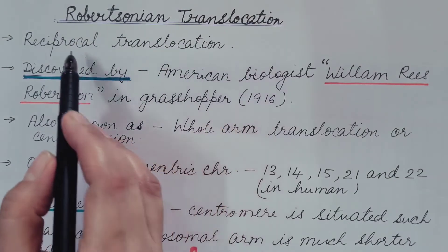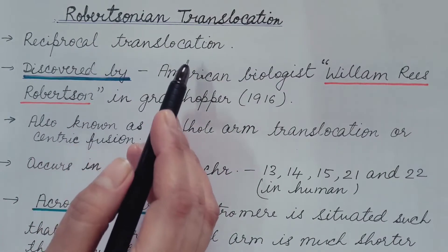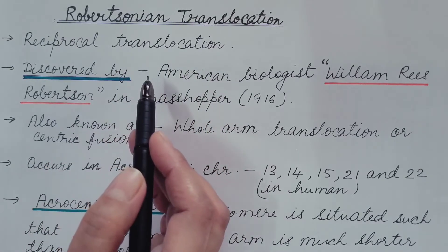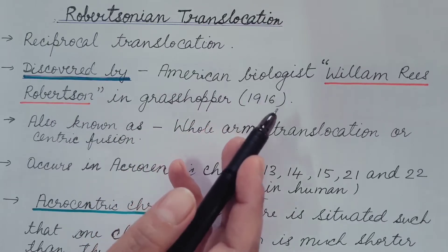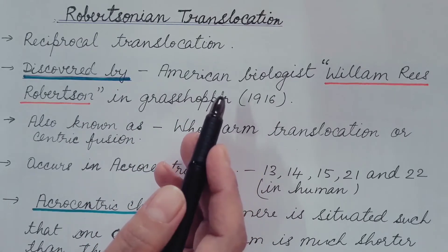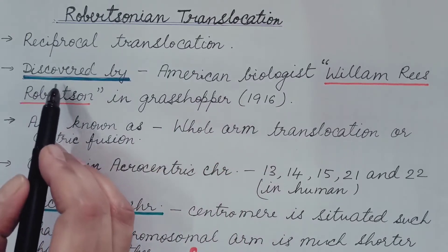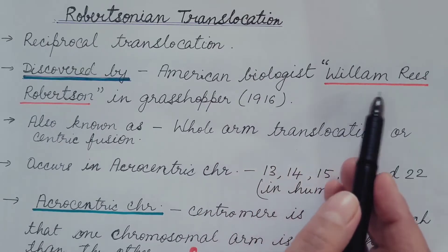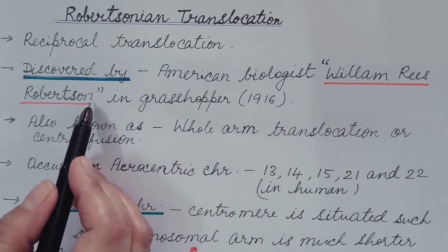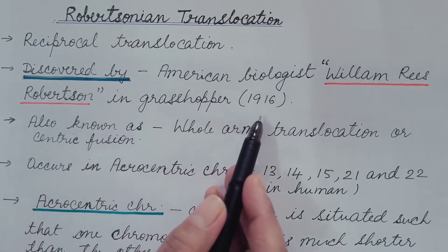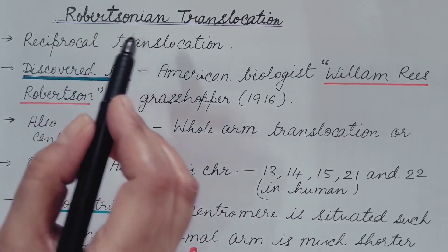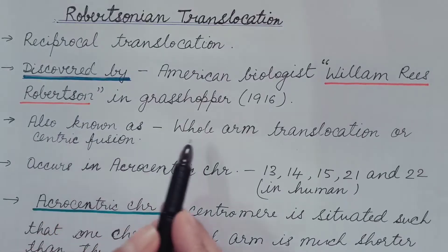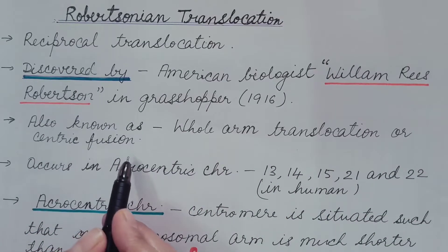Robertsonian translocation is a type of reciprocal translocation. We have already discussed reciprocal translocation in the translocation video — you can refer that video to understand it better. This Robertsonian translocation was discovered by American biologist William Reese Robertson in grasshopper in 1916, hence the name Robertsonian translocation. It is also known as whole arm translocation or centric fusion.